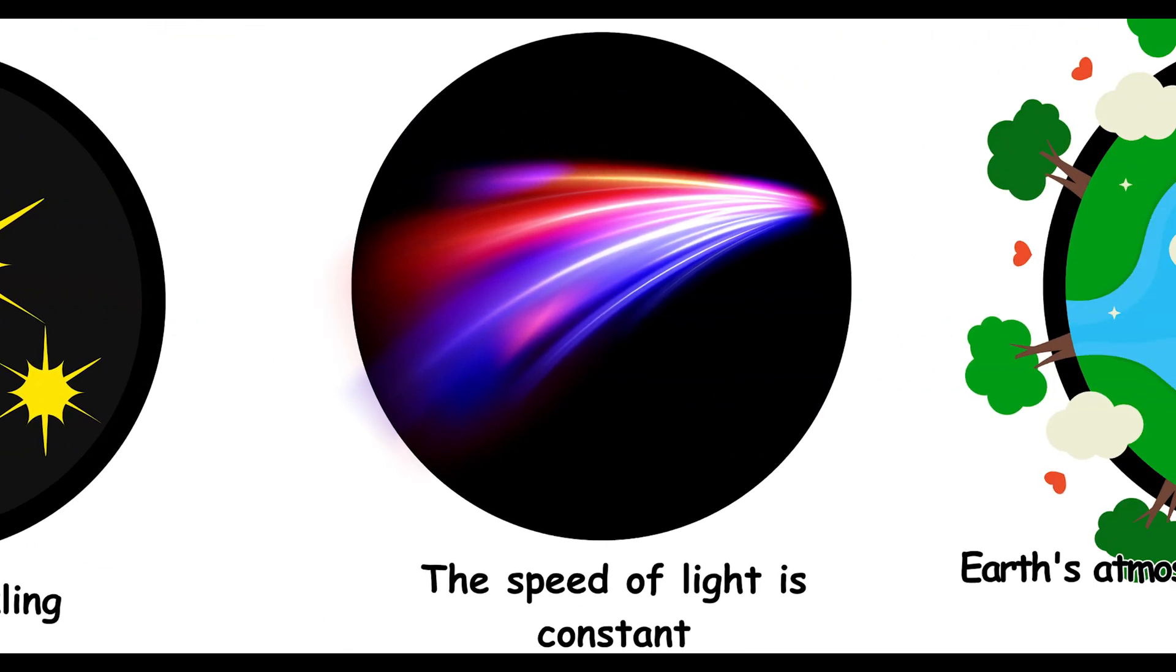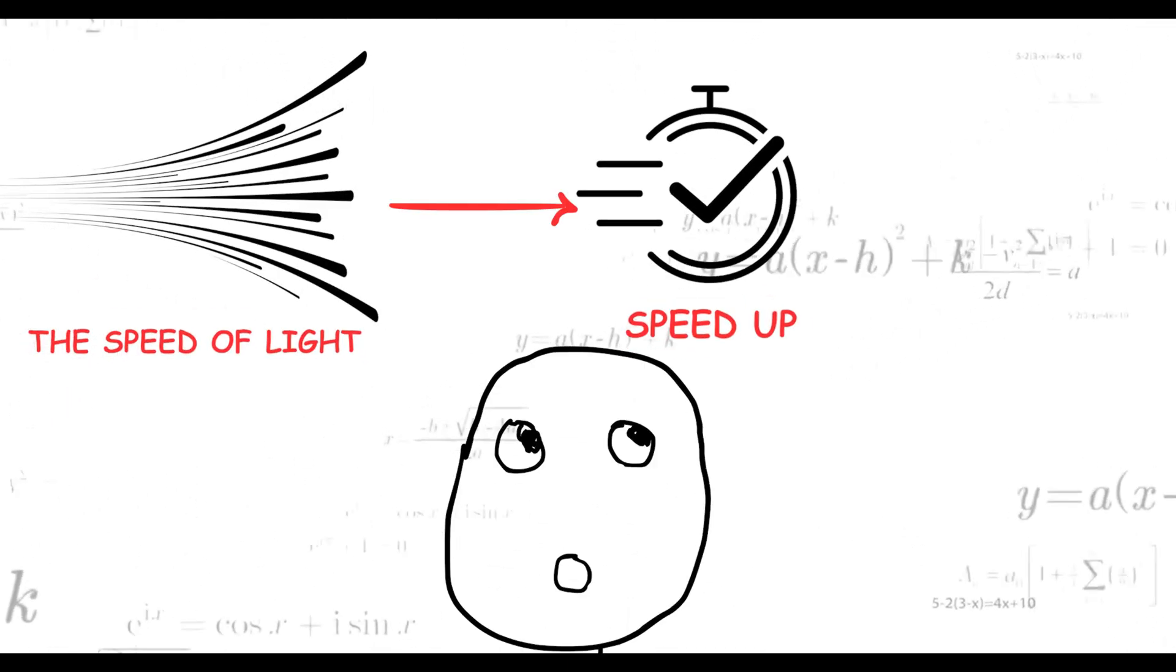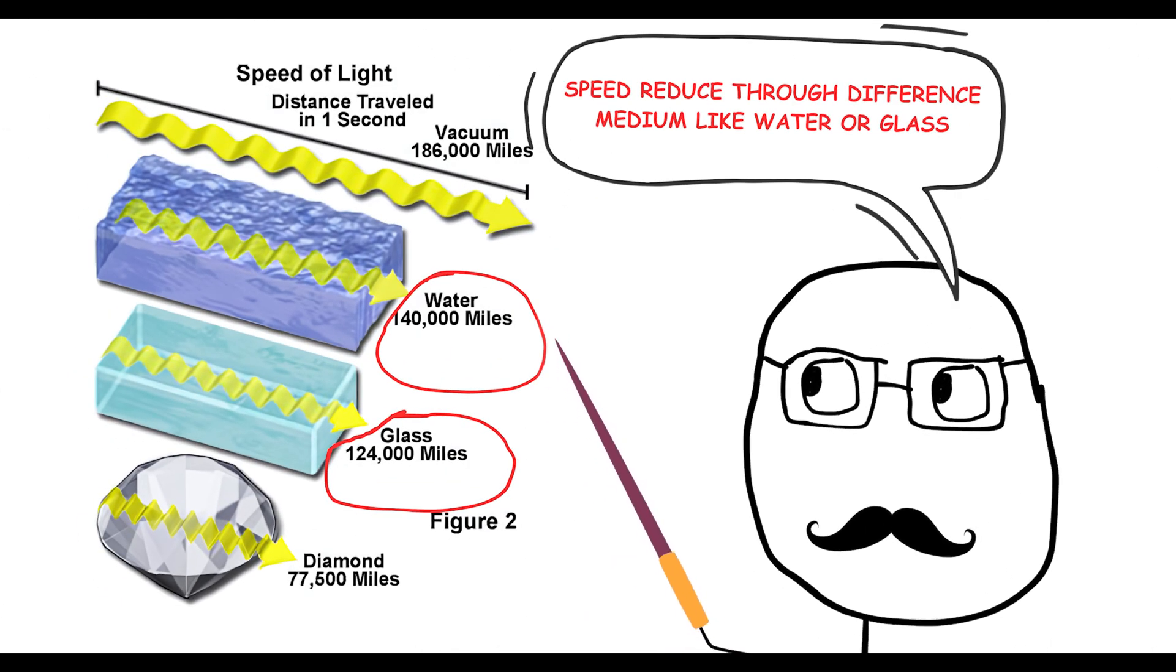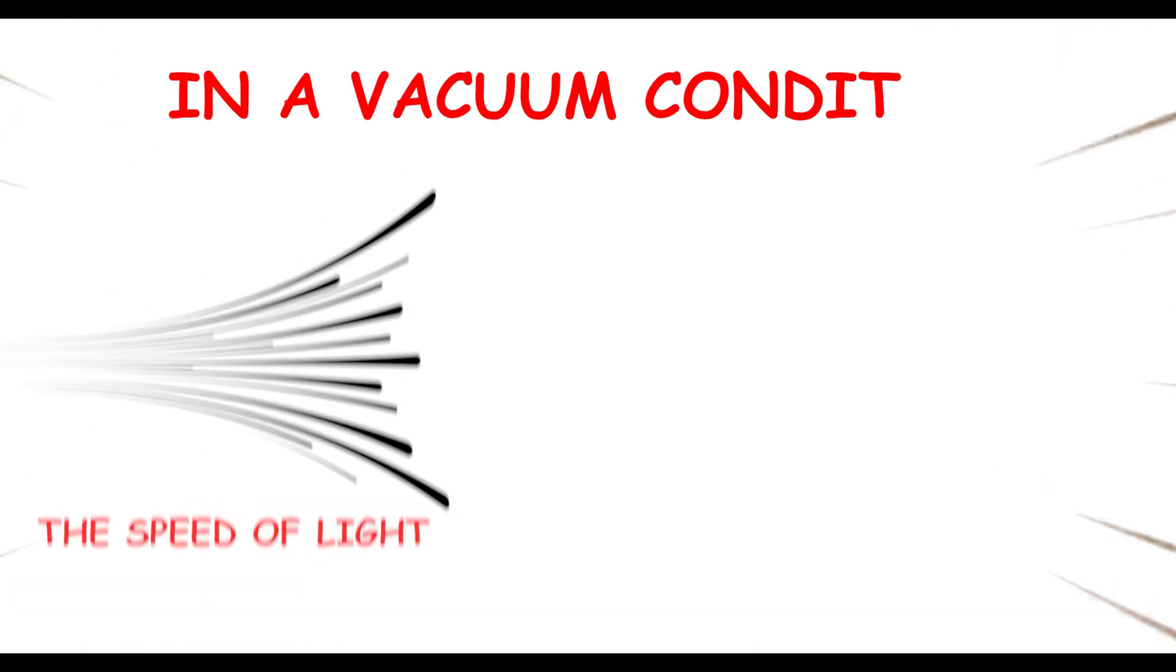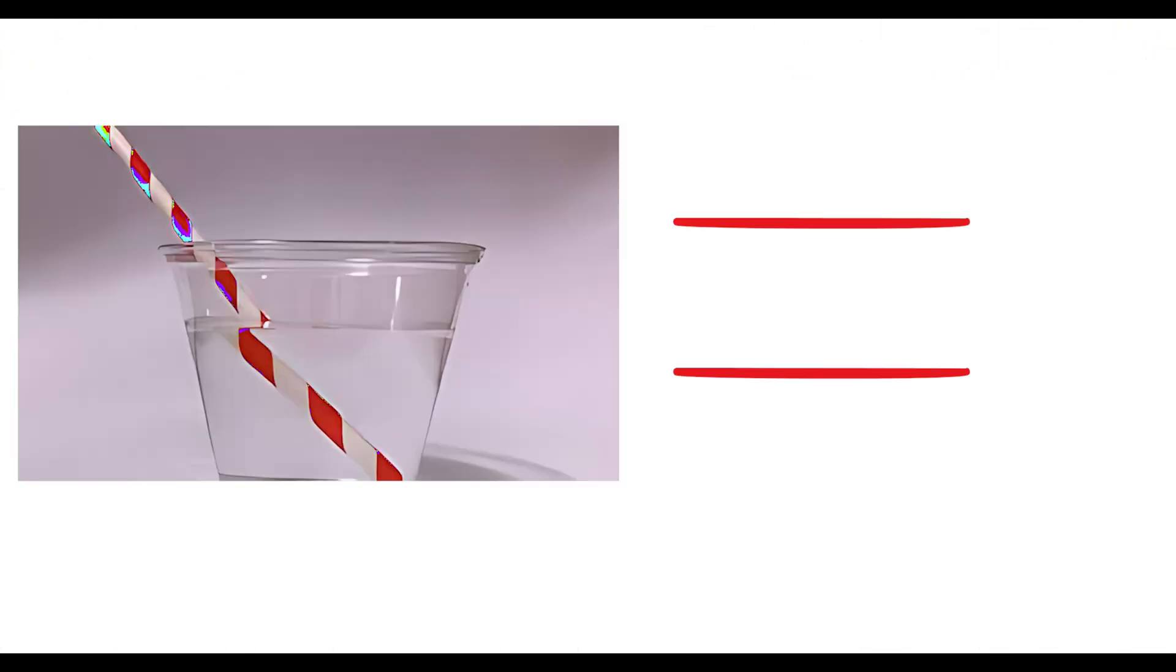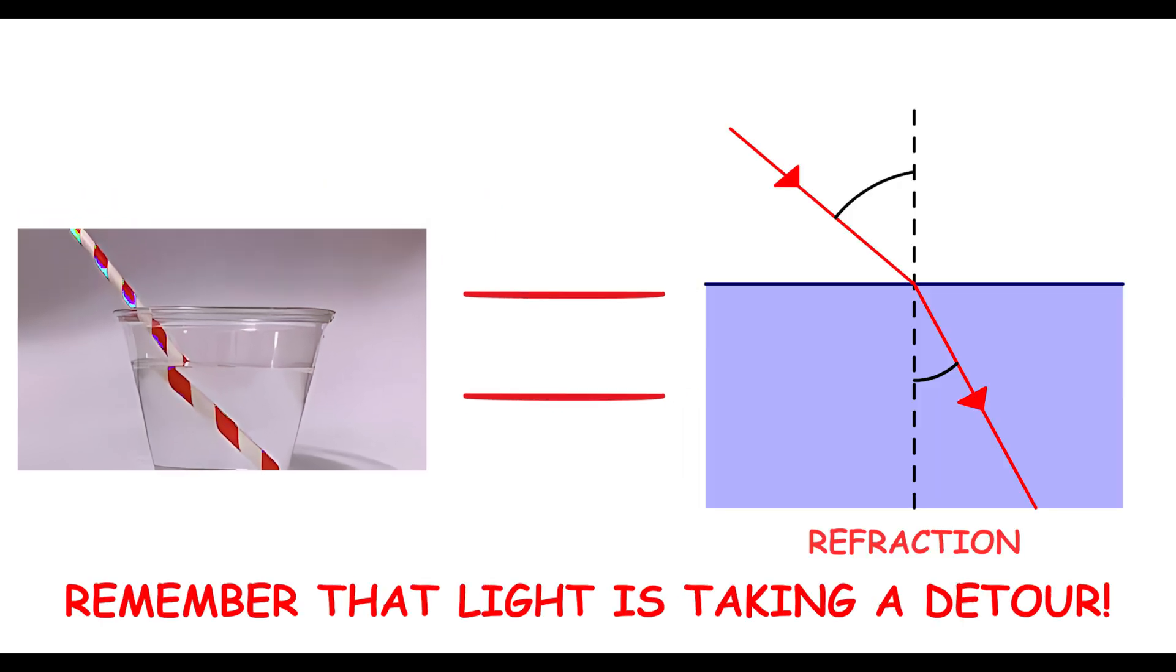The speed of light is constant. Did you know the speed of light isn't always constant? It can actually slow down. Light slows down when it passes through different mediums like water or glass. However, in a vacuum, it always travels at about 299,792 kilometers per second. Next time you see a straw in a glass of water, remember that light is taking a detour.